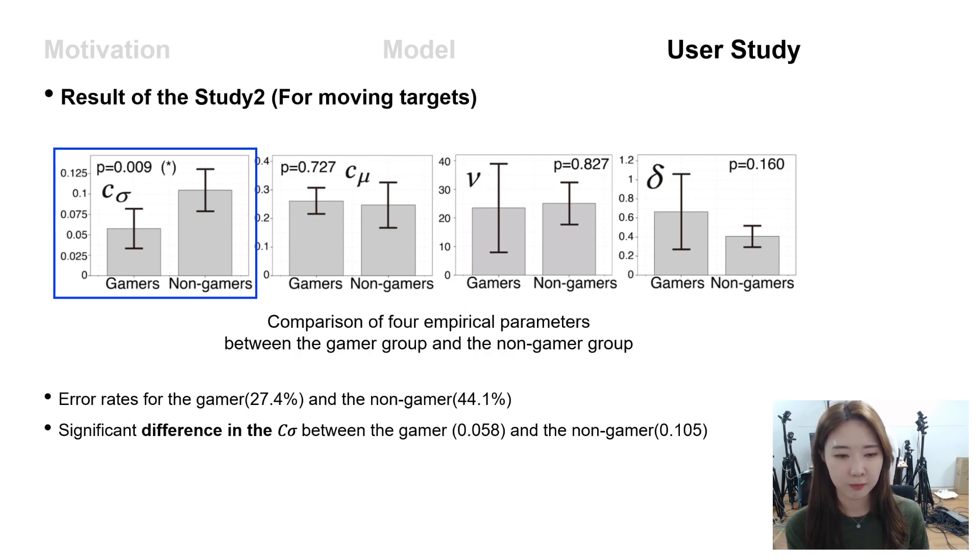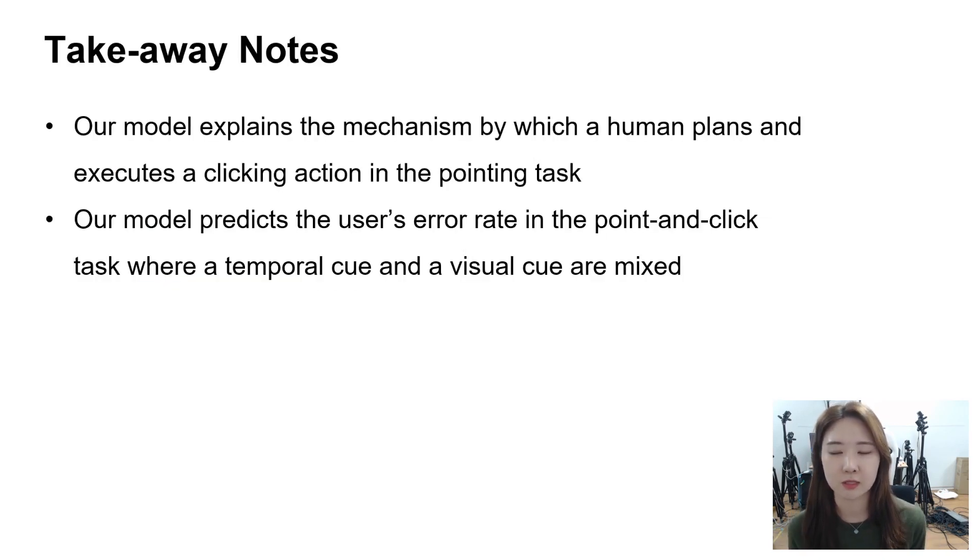Please refer to our paper for detailed explanation or analysis of the results. So this is our takeaway notes. Our model explains the mechanism by which a human plans and executes a click action in the pointing task. And our model predicts the user's error rate in the pointing and click task, where a temporal cue and a visual cue are mixed.